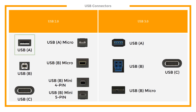USB-A, shown in the top left, is one of the most common types of USB connectors. Nearly all computer peripherals use a male USB-A connector as a primary means of data transmission. USB-B, like USB-A, is commonly used to connect computer peripherals to the computer. USB-A and USB-B connectors are often found together on a single cable.